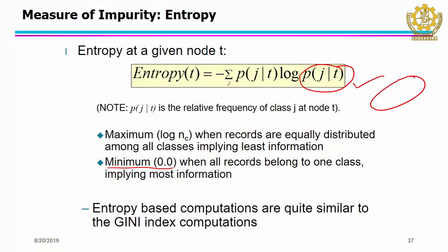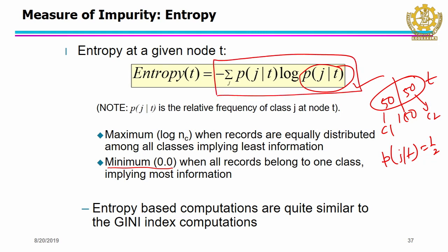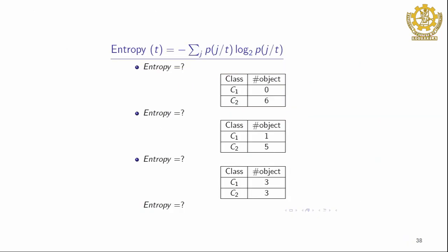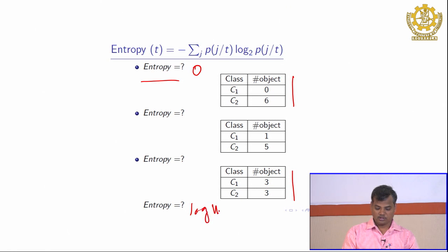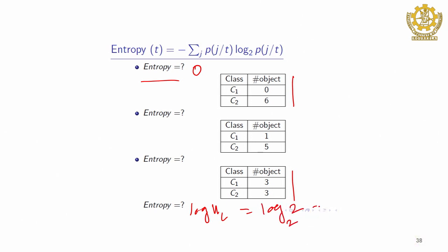Suppose you have 100 objects: 50 belong to class C1 and 50 belong to class C2. Then p(j,T) for each object at node T will be 0.5. If you take the summation, you will get log(nc). For this equal distribution case the entropy value is log(nc) — here log base 2 of 2, which equals 1.